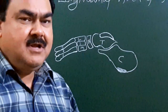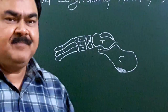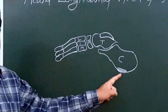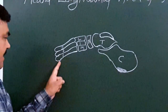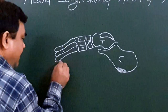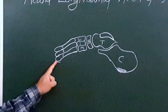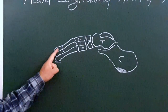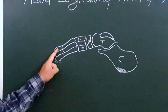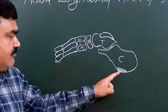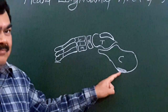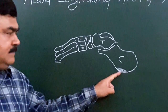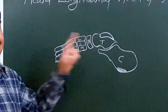This medial longitudinal arch has two ends. It has an anterior end and a posterior end. The anterior end is formed by the heads of the first, second, and third metatarsals. The posterior end is formed by the medial tubercle of the calcaneum.